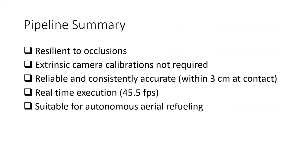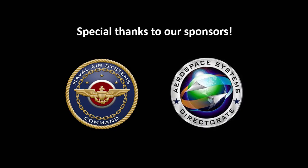Overall, results show our relative vectoring pipeline is resilient to occlusions, does not require any extrinsic camera calibrations, is reliable and consistently accurate to within 3 centimeters at contact, and runs at at least 45.5 frames per second, making it suitable for autonomous aerial refueling. Thank you for watching, and a special thanks to our sponsors at the Naval Air Systems Command and Air Force Aerospace Systems Directorate. This research was possible through your continued partnership and support.